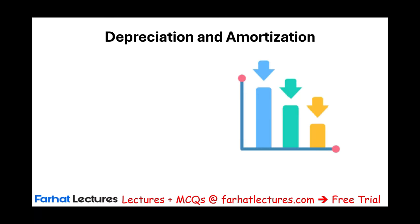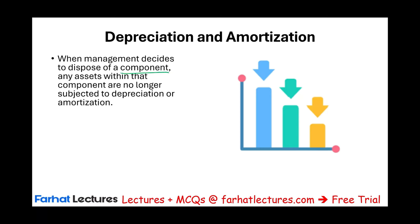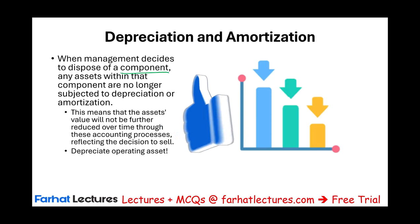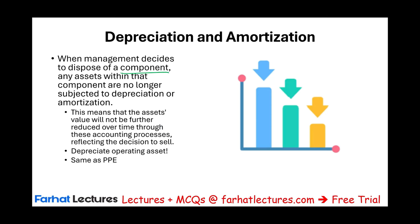An important point about assets held for sale: we do not depreciate them. When management decides to dispose of a component, any assets within that component are not subject to depreciation. This makes sense because we depreciate assets that are in operation. Once we put a division for sale — held for sale — the asset value will not be further reduced through depreciation. We only depreciate operating assets. The same applies to a specific long-term asset such as a truck, vehicle, or building: once it's held for sale, it is no longer depreciated or amortized.